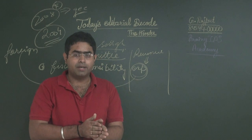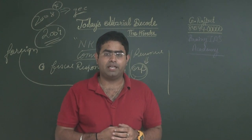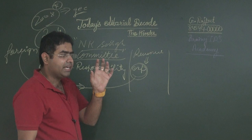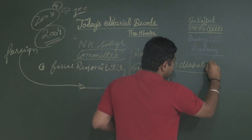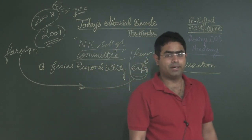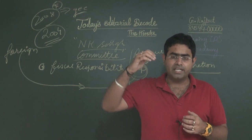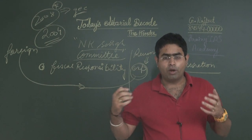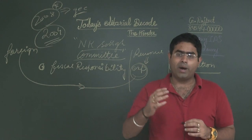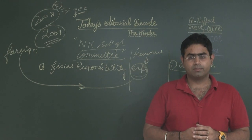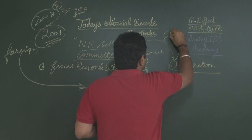The government set up the NK Singh Committee, which put forward its recommendations two months back. The committee emphasized a few critical aspects. The first critical aspect is taking away the discretion from the government. Governments have a tendency to spend more because of political pressures, the political scenario, and populistic measures they tend to introduce.